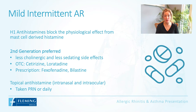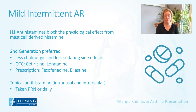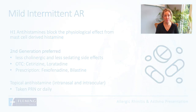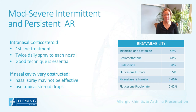H1 antihistamines block the physiological effect of mast cell-derived histamine. Second-generation antihistamines are preferred as they are less cholinergic and less sedating. Over-the-counter options include cetirizine or loratadine, and on prescription, higher-dose bilastine. Topical antihistamines are also available. For mild intermittent allergic rhinitis, antihistamines can be taken either as needed or on a regular daily basis.